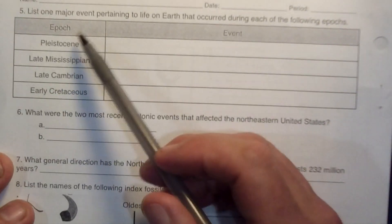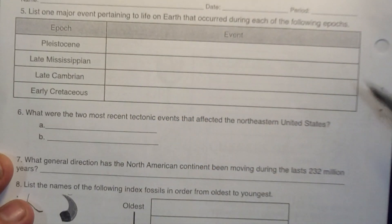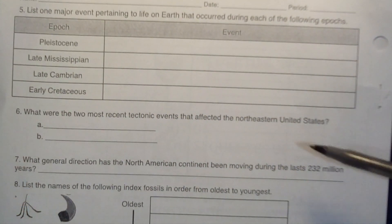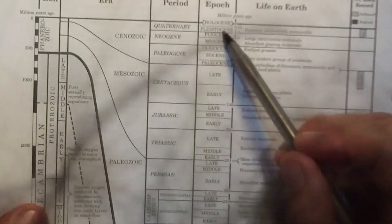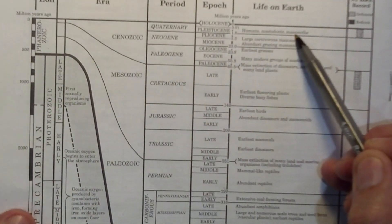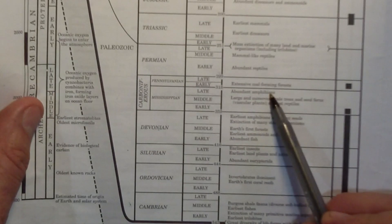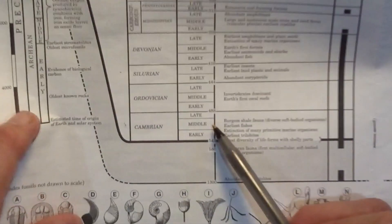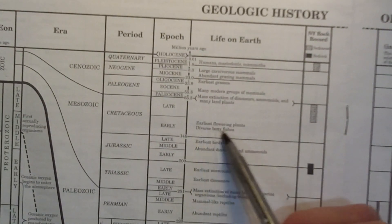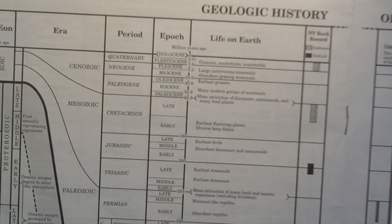Number five: list one major event pertaining to life on Earth during each of the following epochs. The Pleistocene epoch: humans, mastodonts, and mammoths. The Late Mississippian: abundant amphibians. The Late Cambrian: nothing is listed. Early Cretaceous: earliest flowering plants and diverse bony fishes.